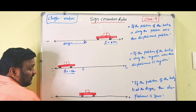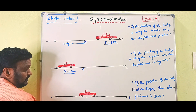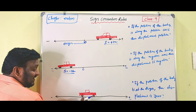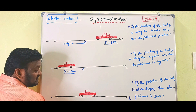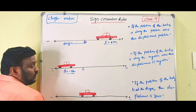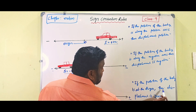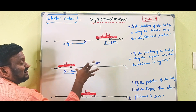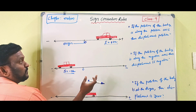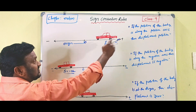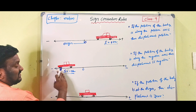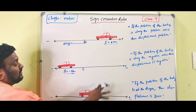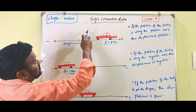The third rule: the position of the car is exactly at the origin. It is not moving towards the negative axis nor the positive axis — it is exactly at the origin. In this case the displacement is zero. If the position of the body is at the origin, then the displacement is zero. So these are the three rules to identify whether displacement is positive, negative, or zero: body along positive axis → displacement positive; body along negative axis → displacement negative; body at origin → displacement zero. This covers the sign convention rules for displacement.